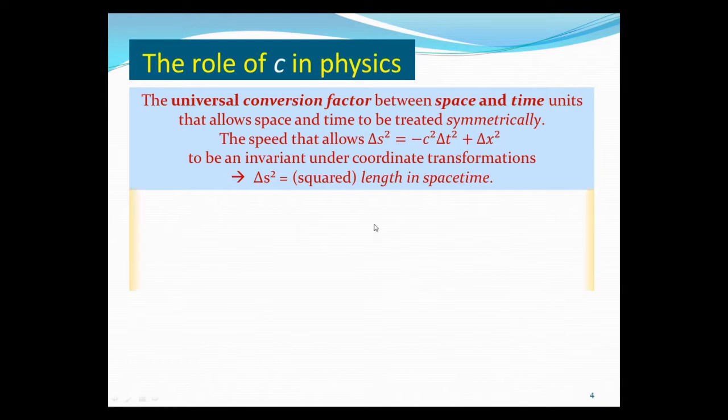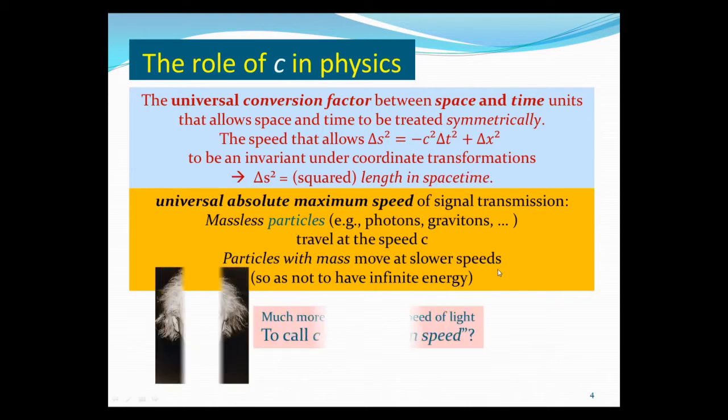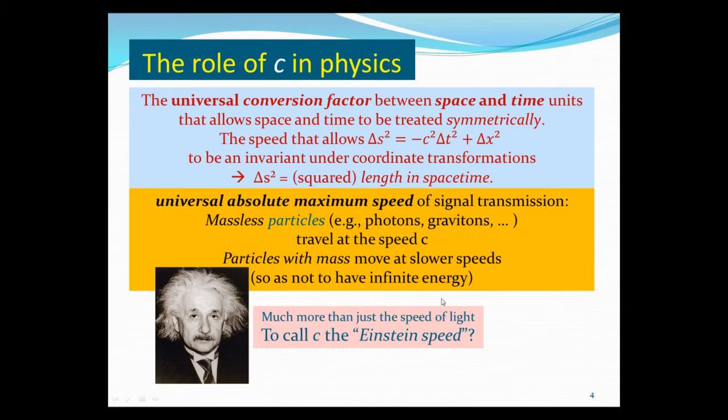All massless particles—photons and gravitons, the particle quanta of the gravitational field—they all travel at speed c. Particles with mass move always less than c. They cannot reach c because that would involve infinite energy. So c represents the maximum possible speed for particles. In some sense, c really plays a much bigger role than just the speed of light, and some people suggest we should call c the Einstein speed, not just the speed of light. This ends the second part.